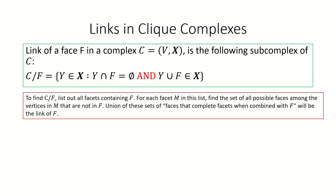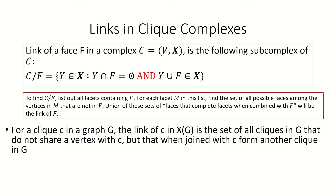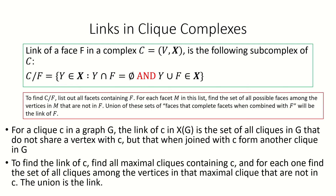Repeat this process for each maximal face that contains F, and you'll get the link by taking the union of all the faces that we find. So, from the perspective of clique complexes, the link of a certain clique C is the set of all cliques in G that complete a clique when added to C, but do not share any vertices with clique C. If we wanted to find the link of a clique C using this method, we could first find the maximal cliques that contain C, and then for each of these maximal cliques, find the set of all cliques formed just from the vertices in the maximal clique that are not in C. The union of these sets would be the link of C.